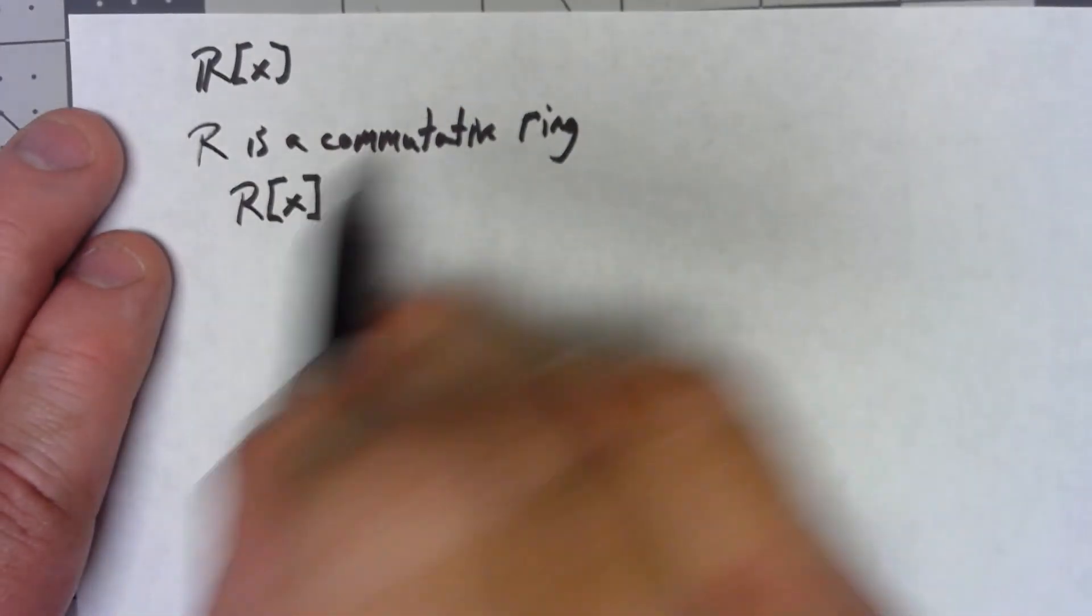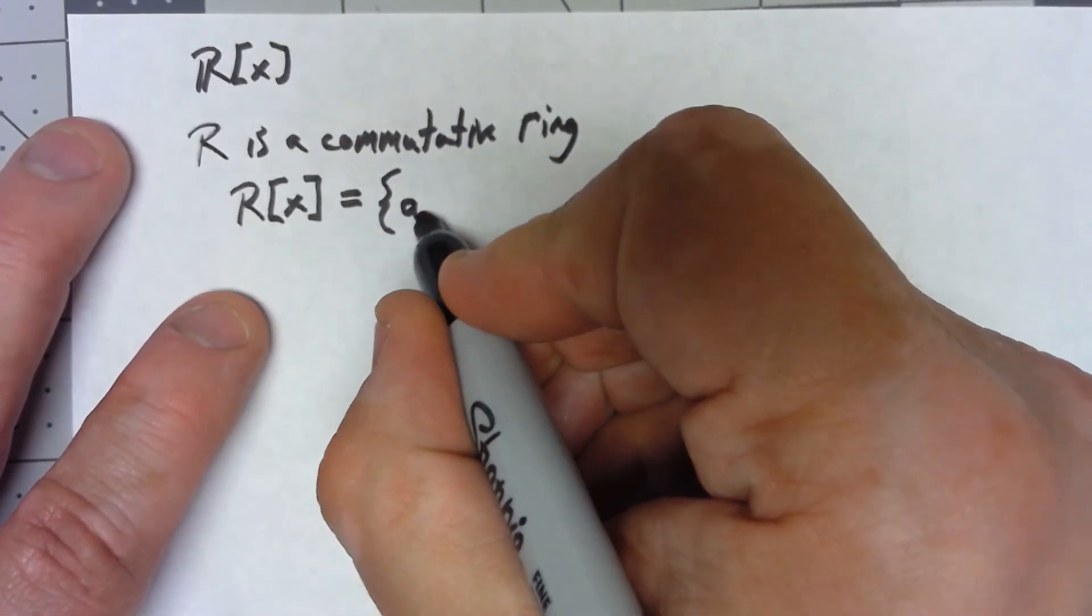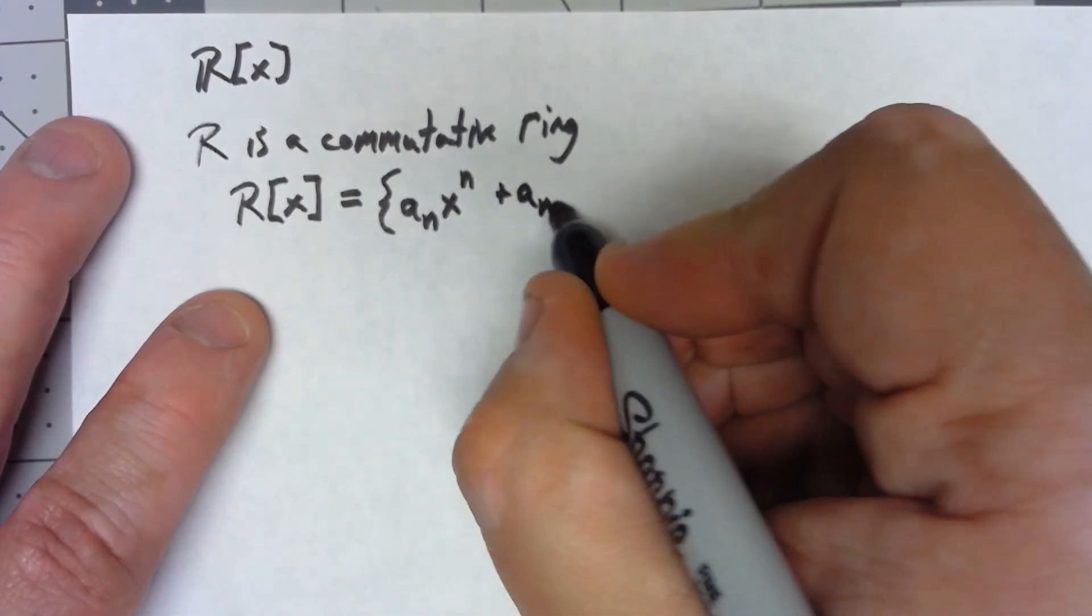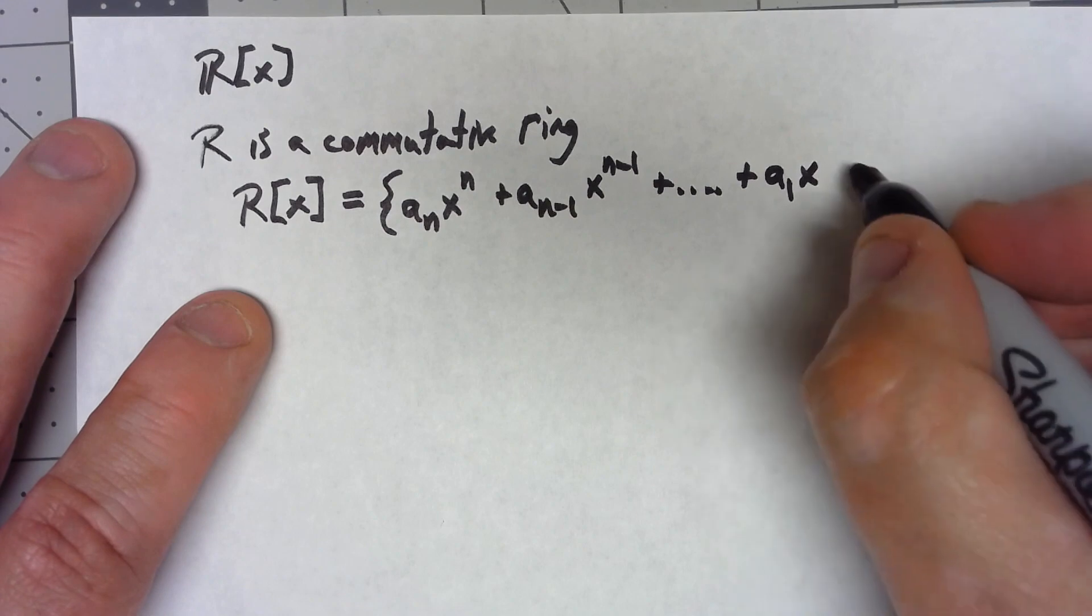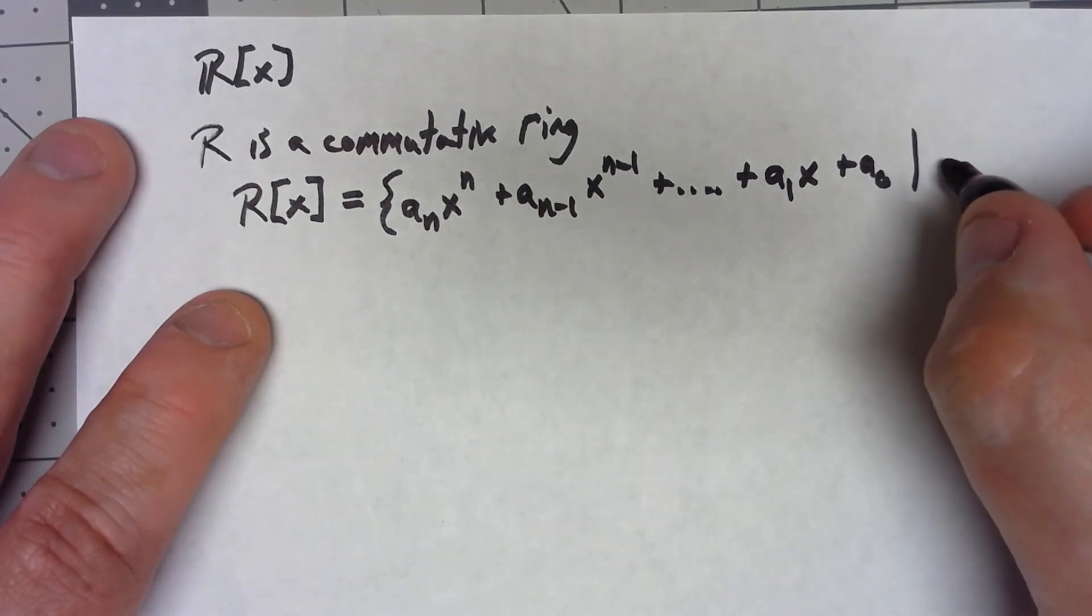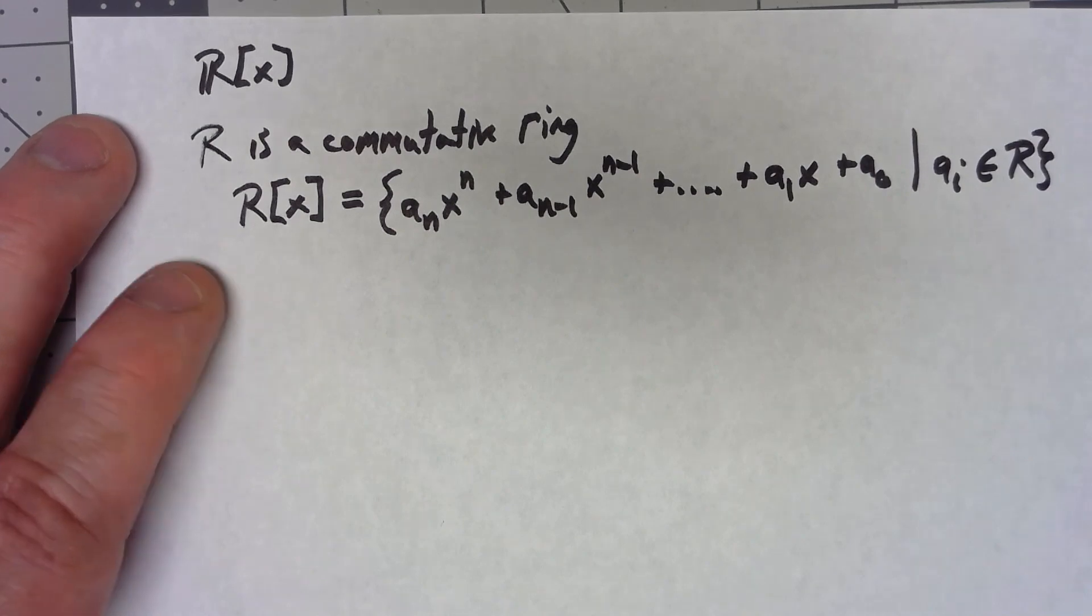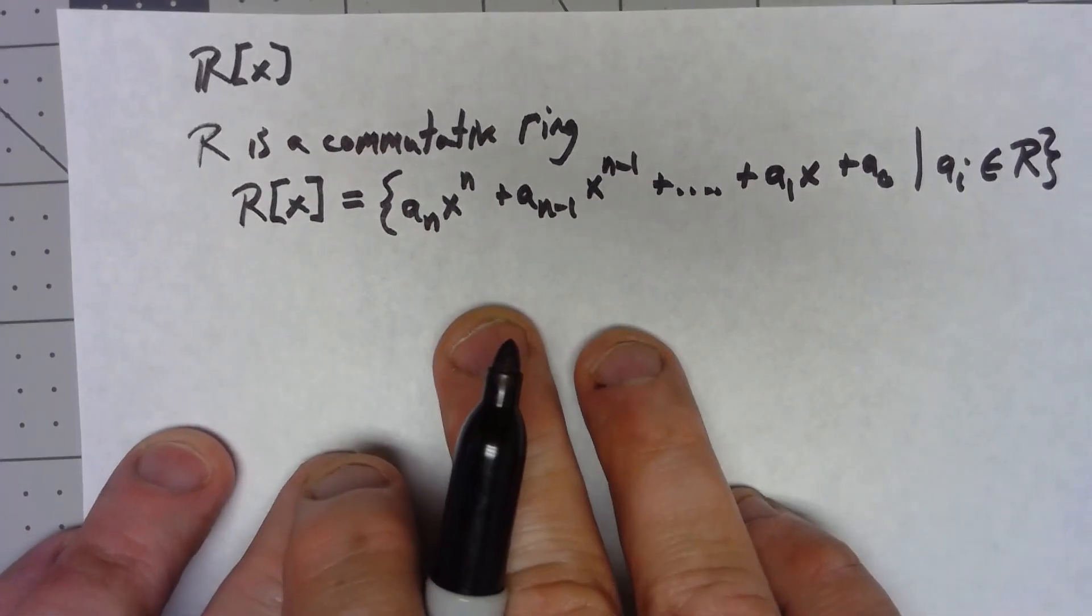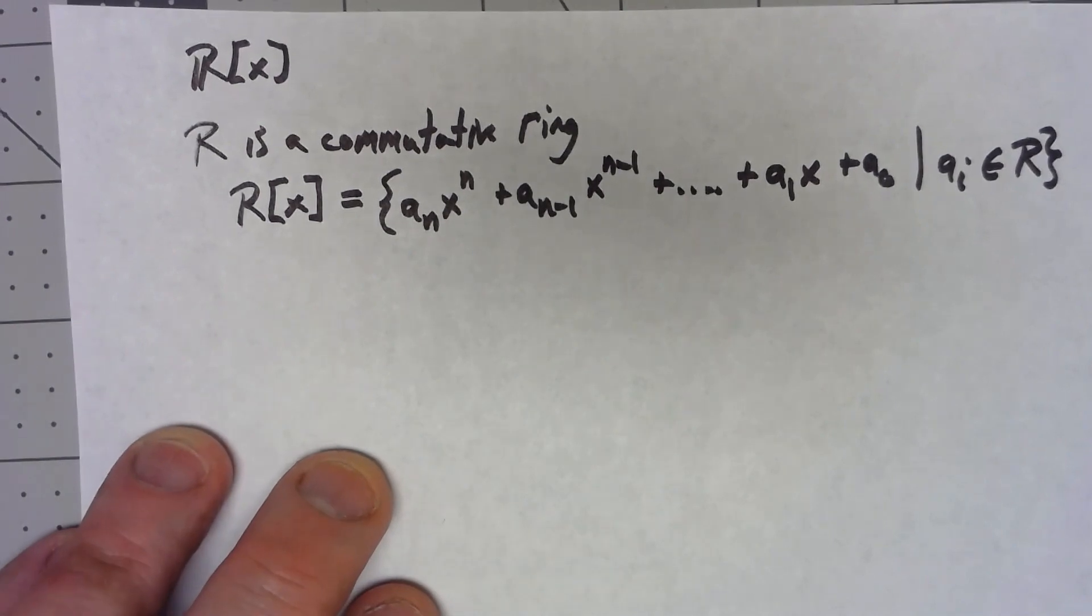Now we're not using the real numbers here, it could be, but really this is any ring in general. So we're going to say the ring of polynomials with coefficients from this commutative ring is basically exactly what you would think. We're going to say it's all things of the form Anx to the n plus An-1 x to the n minus 1 all the way down to A1x plus A0 such that all the Ai's come from our commutative ring. Now if we do that, addition and multiplication in this thing are going to be exactly what you think they're going to be.